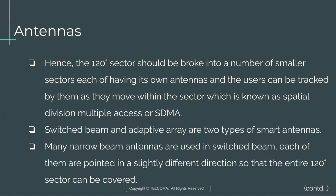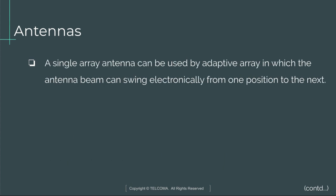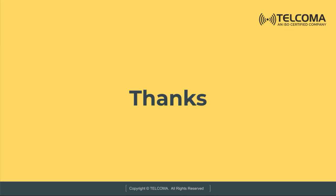Switched beam and adaptive arrays are the two types of smart antennas. In switched beam, many narrow-beam antennas are used, each pointed in a slightly different direction so that the entire 120-degree sector can be covered. An adaptive array uses a single array antenna in which the antenna beam can swing electronically from one position to the next.